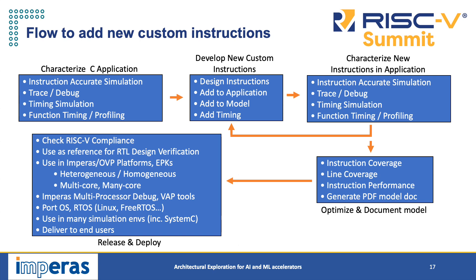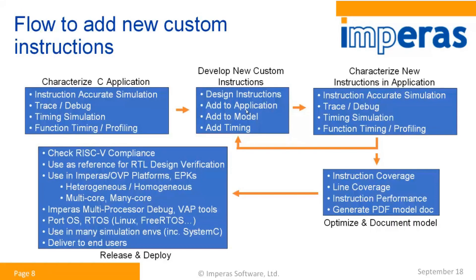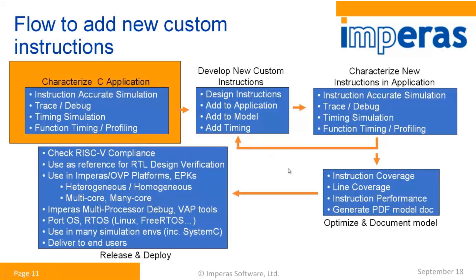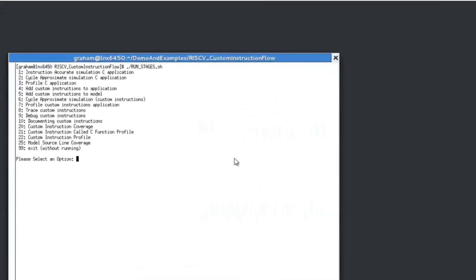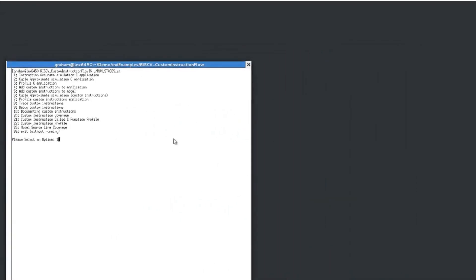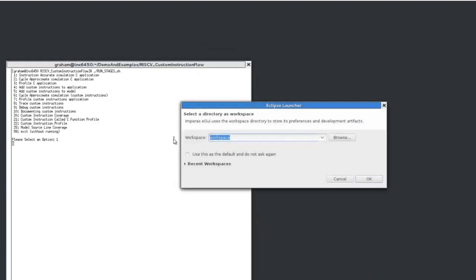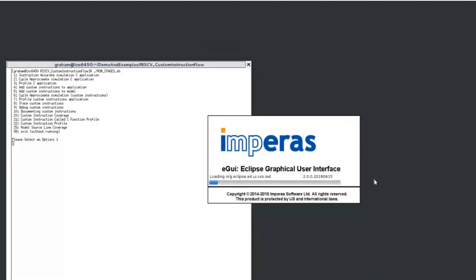Adding extensions is quite a complex process — you've got to add the extensions and analyze everything. We have a whole flow for this, and I'm now going to pass to my colleague Duncan who's going to go through this flow and demonstrate it. Duncan will start by looking at the characterization of C applications using the Imperius simulation environment and tools — tracing, debugging, timing, function profiling, and timing information.